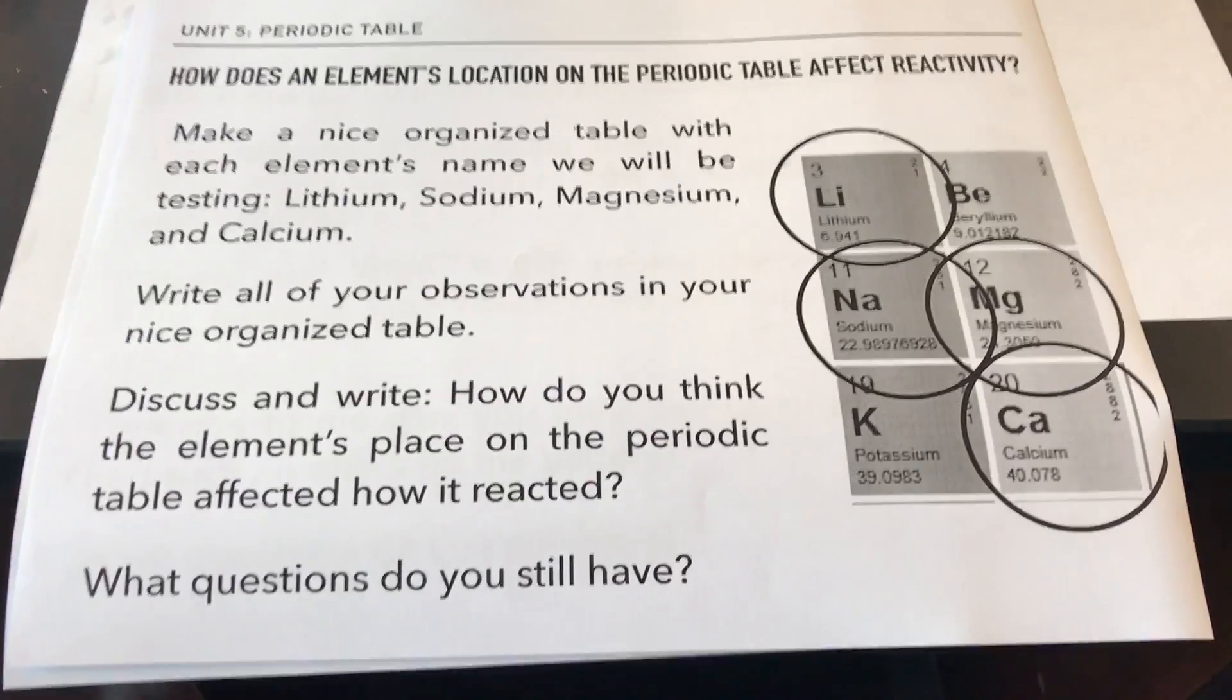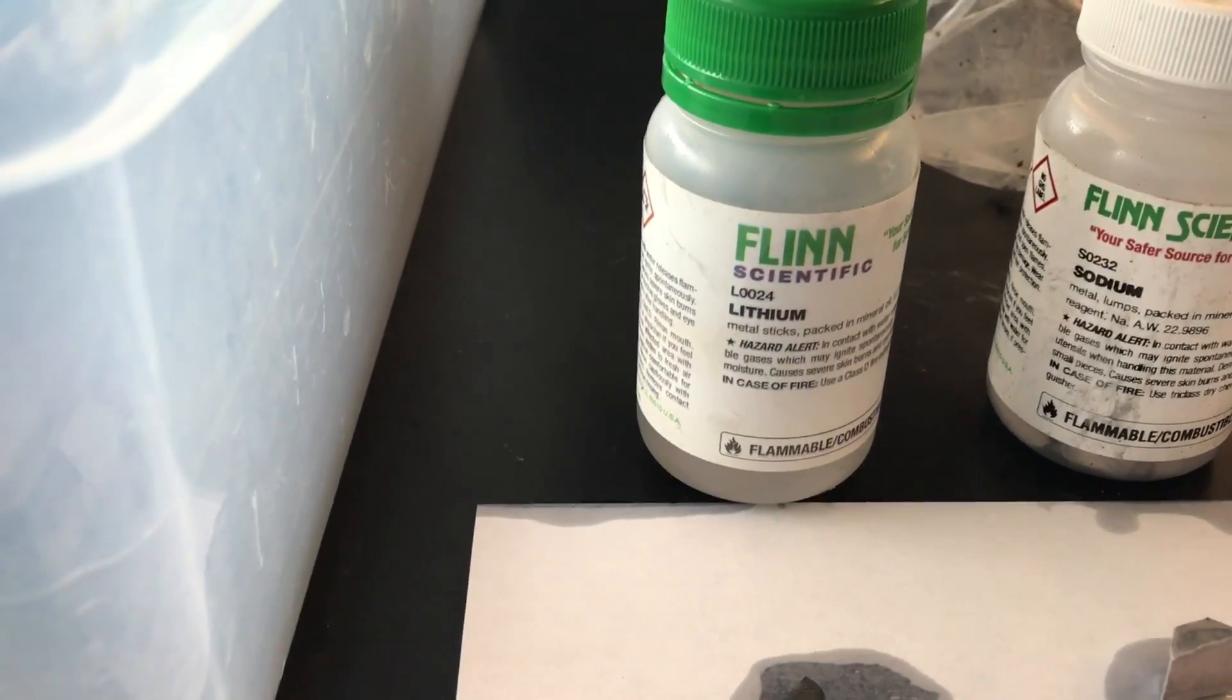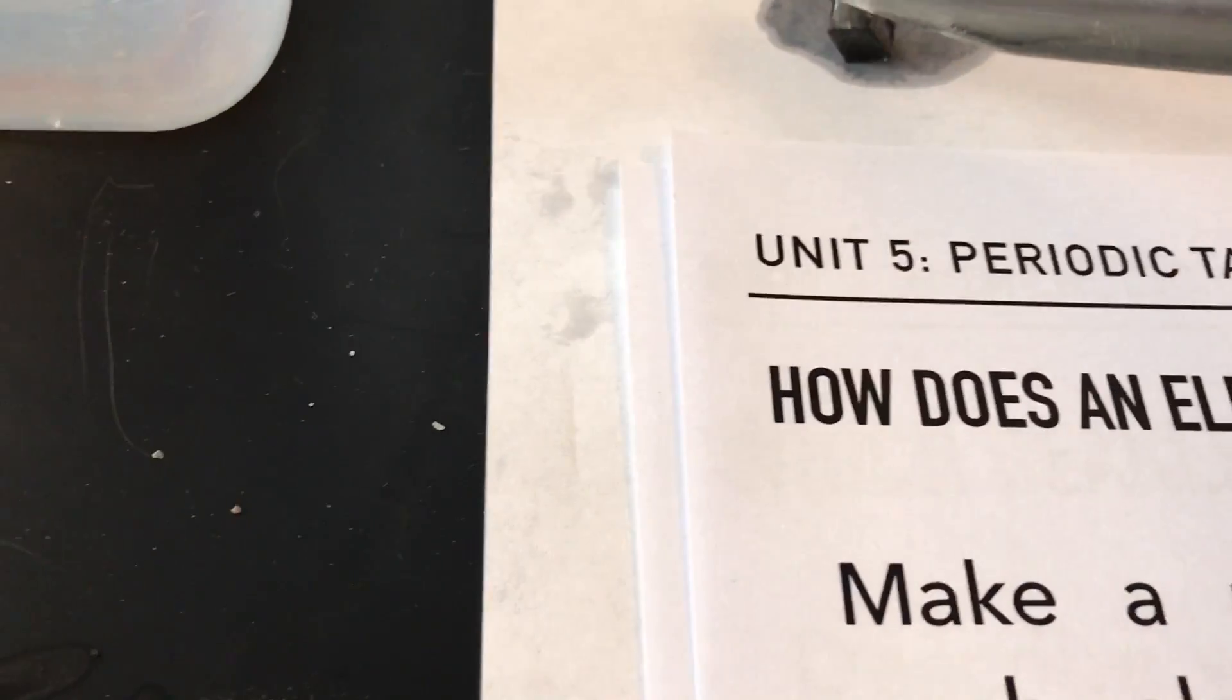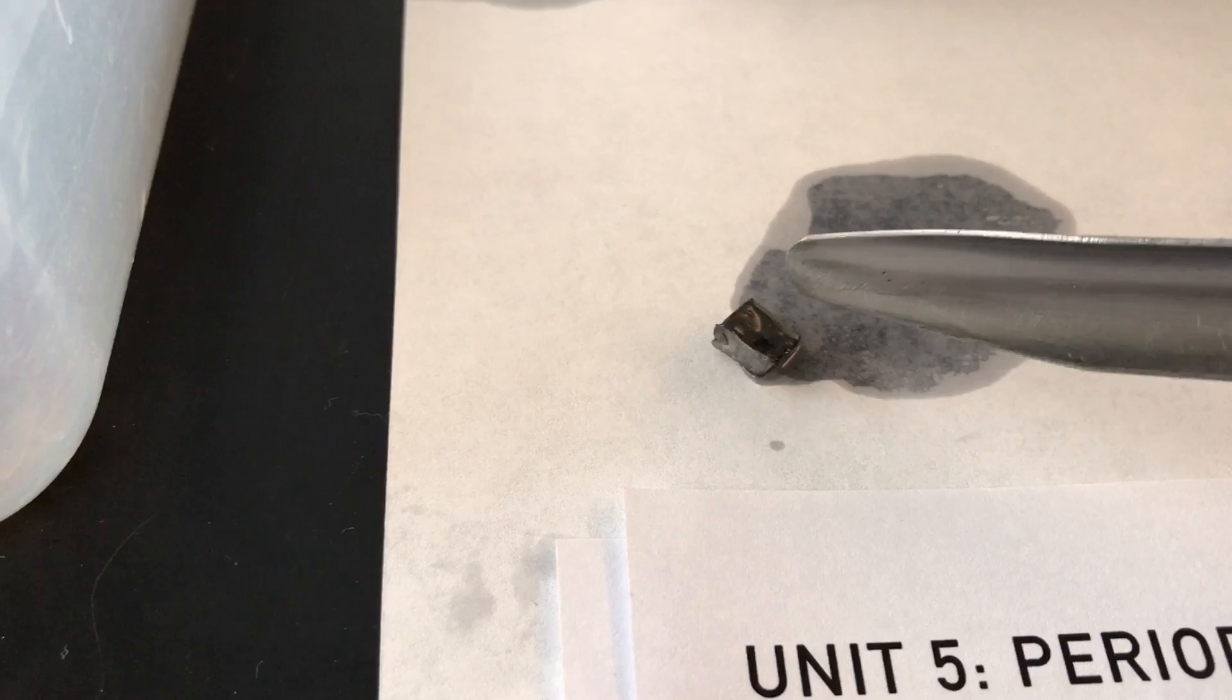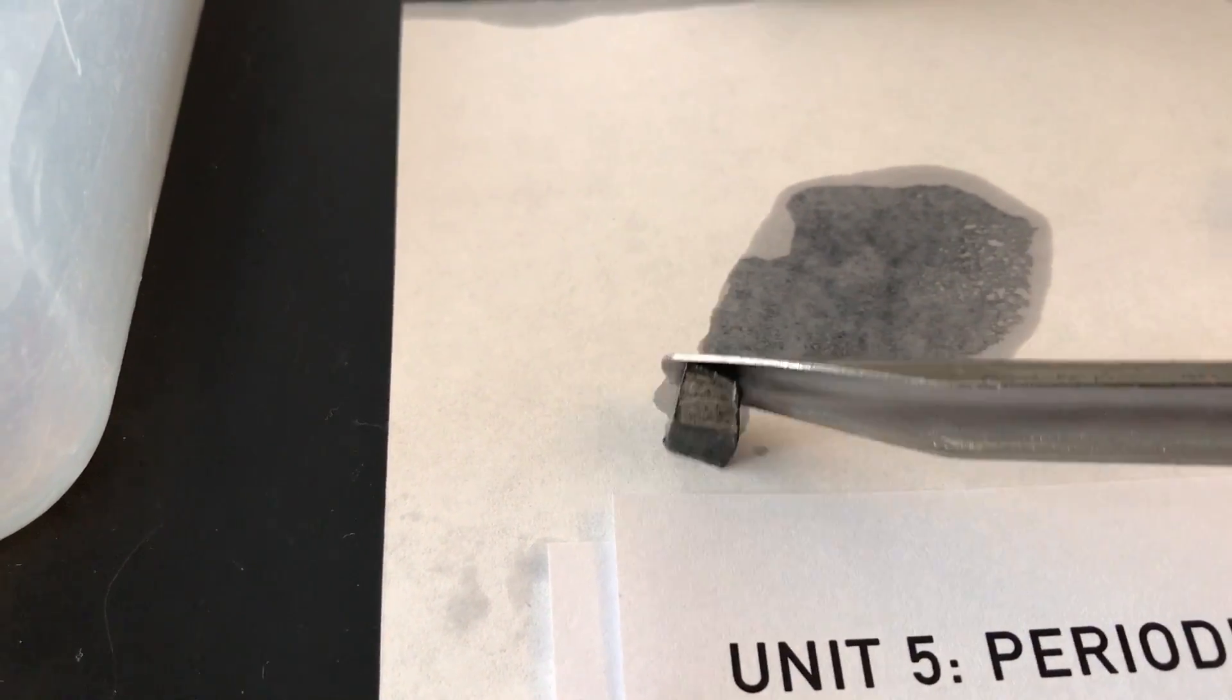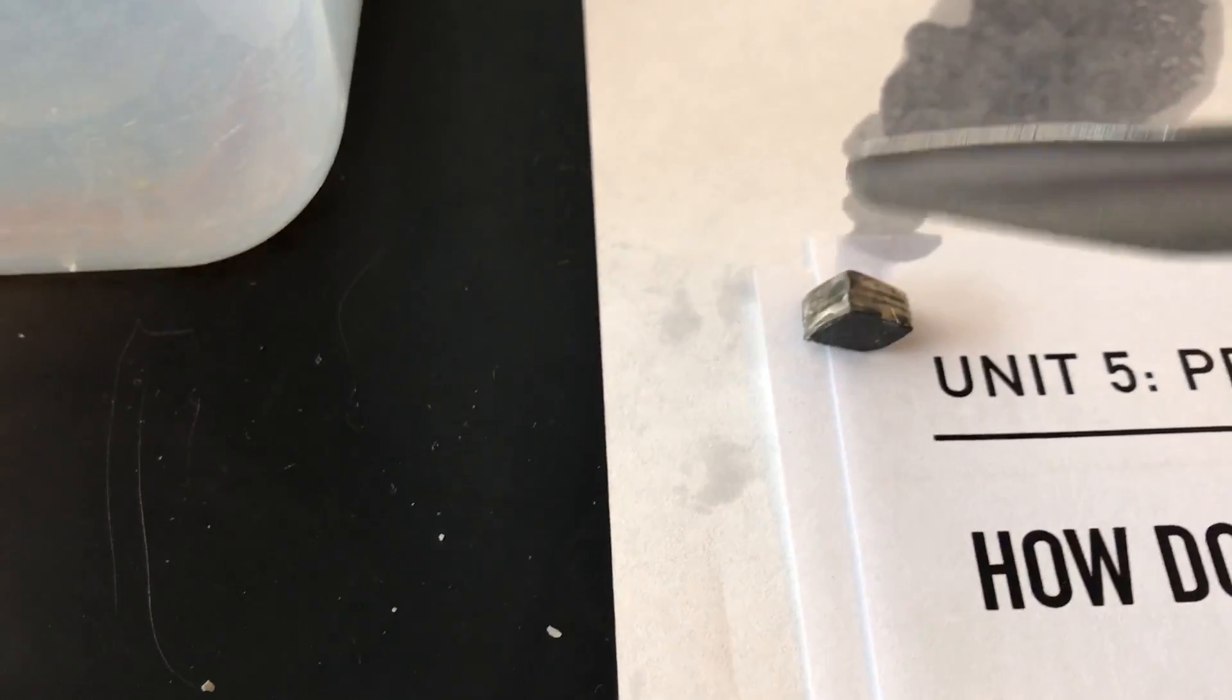The first thing that we're going to be looking at is just the appearance of each element. So I have lithium right here inside of this little container. And now you really can't see a lot of detail here, but that's because it's on top of a layer of oil or something. So that is what lithium looks like. That's pure lithium metal. So what does that look like to you? Make some observations.